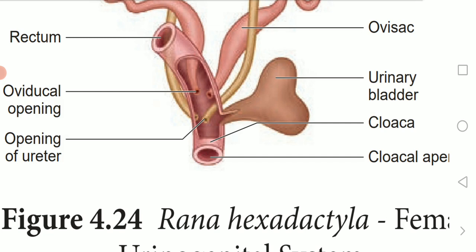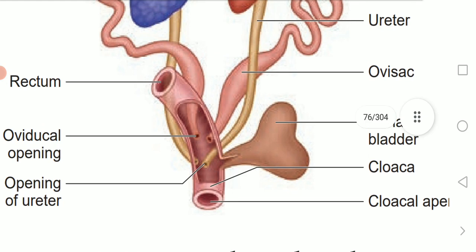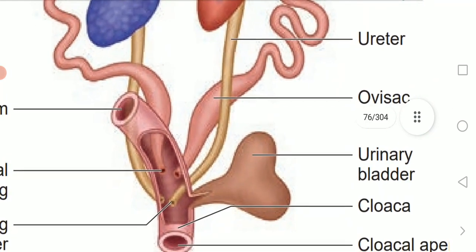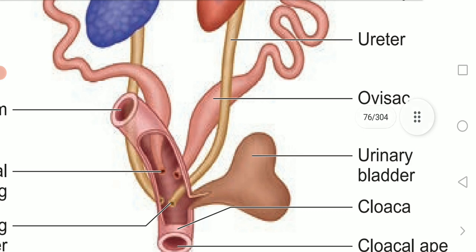Posteriorly, the oviducts dilate to form ovisacs. On the bottom side, the oviducts expand to form ovisacs. The ovisacs store eggs temporarily before they are sent out through the cloaca.